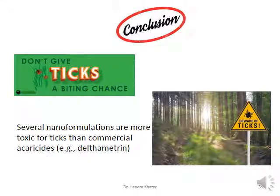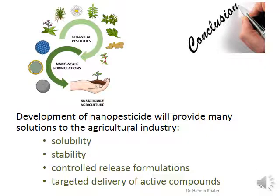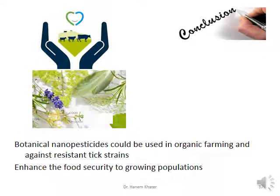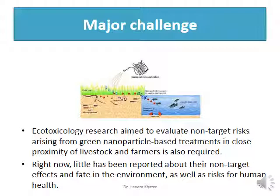Conclusion: Several nanoformulations are more toxic to ticks than commercial acaricides such as deltamethrin. Development of nanopesticides will provide many solutions to the agriculture industry such as solubility, stability, controlled release formulations, and target delivery of active compounds. Botanical nanopesticides could be used in organic farming and against resistant tick strains. Ultimately, they would enhance food security for growing populations. For sure, their ecotoxicological profile should be revealed before application.